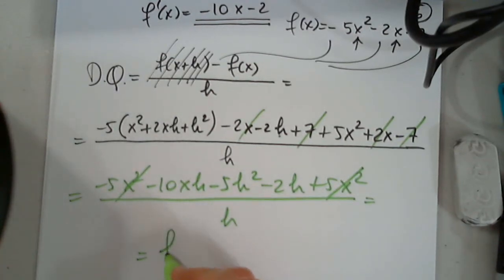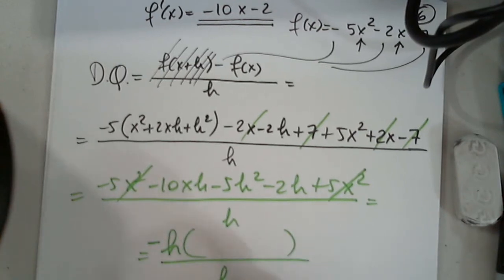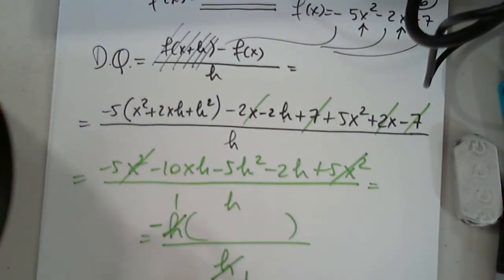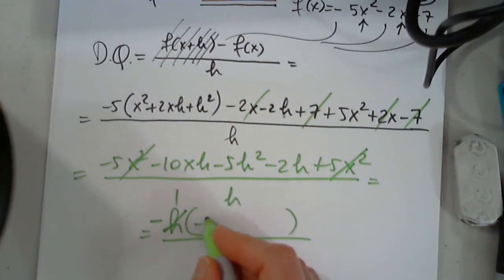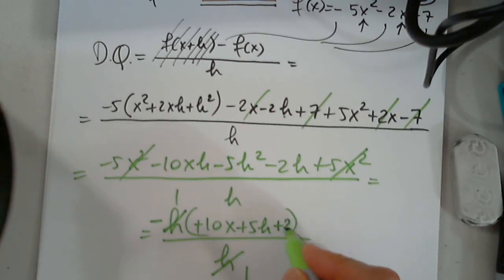The top has to have h in common, even negative if you want. Why? Because I know that these have to go away. So this will be negative, of course, positive 10x, positive 5h, and positive 2.